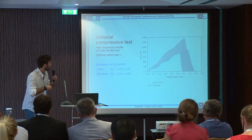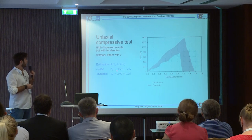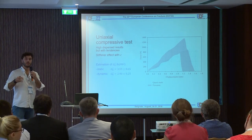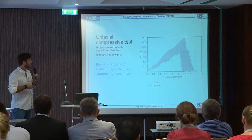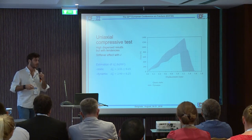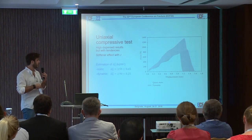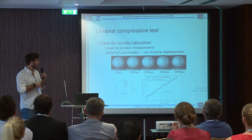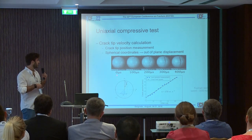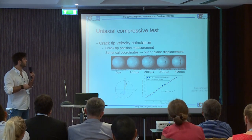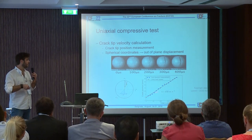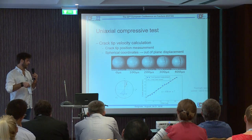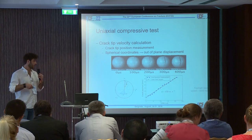We have two curves: the static one and the dynamic one related to the flywheel device test. Thanks to these two tests, as you can see, we have a high dispersion mainly coming from the manufacturing process of the hollow spheres. But we have two tendencies, and we are able to evaluate two G values by computing the energy and dividing by the surface. During the compressive test, we can see one major crack that propagates from the top to the bottom of the sphere, and thanks to the use of spherical coordinates, we are able to measure the crack position related to time, giving a quite linear fitting that gives us the crack velocity.